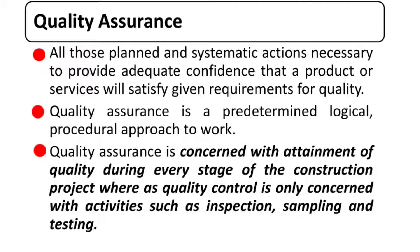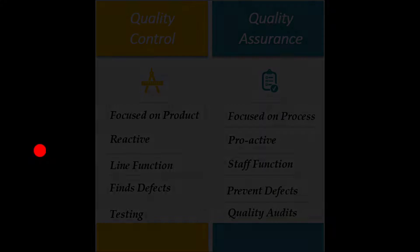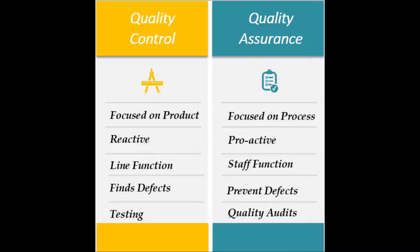Now let us talk about the differences between quality control and quality assurance. Quality control is focused on the product, whereas quality assurance is focused on the process. Quality control is a reactive measure, and quality assurance is a proactive measure. Quality control is a line function, and quality assurance is a staff function.